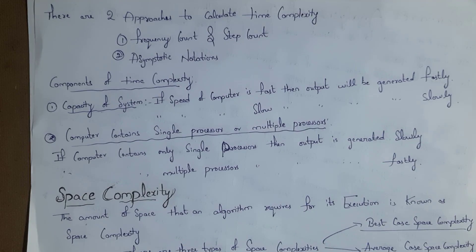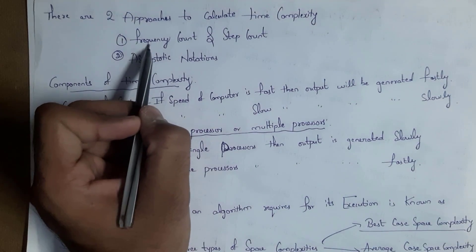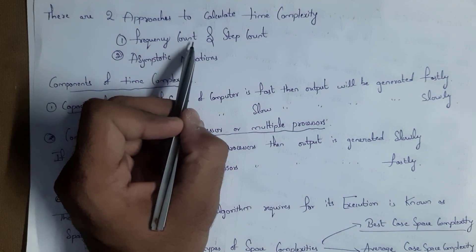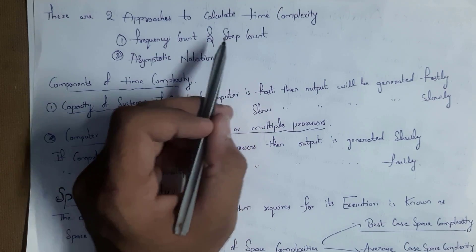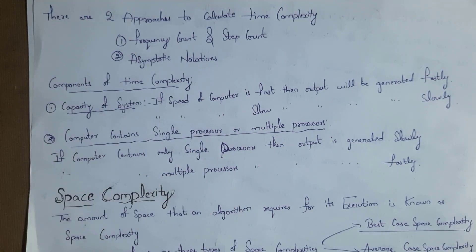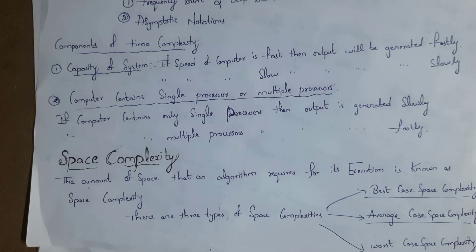In order to calculate time complexity, we use two approaches. The first one is frequency count, also called step count. The second one is asymptotic notations.